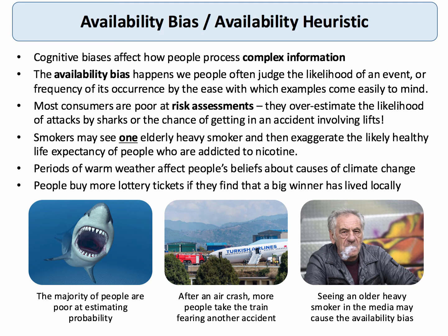Some evidence, for example, suggests that if you live close to somebody who's won a big lottery win, you're more likely to buy more lottery tickets as well. So the availability heuristic is really quite important. We tend to overestimate things that have a saliency in our minds.